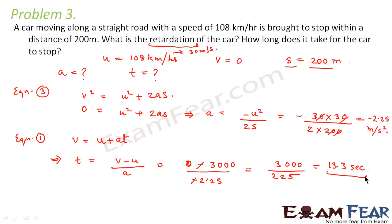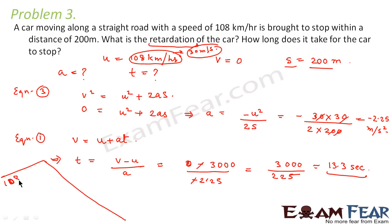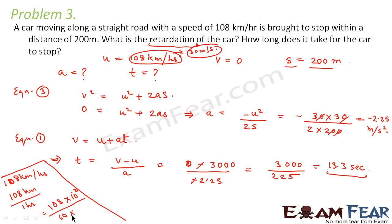Using the three kinematic equations we can solve all kinds of questions, provided we understand the problem properly. As an extra point — the conversion of km/h to m/s: 108 km/h means 108 km per 1 hour. We convert km to meters (multiply by 10³) and hours to seconds (divide by 3600, i.e., 60 times 60). Calculating this gives 30 m/s.